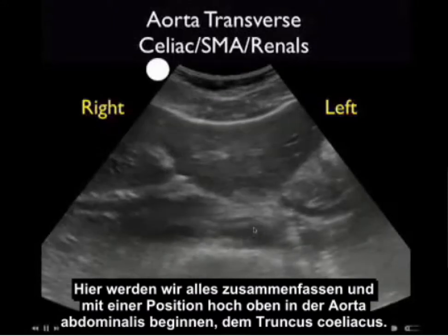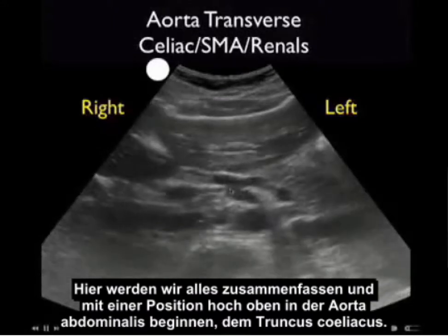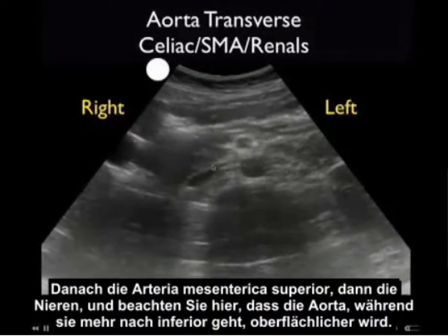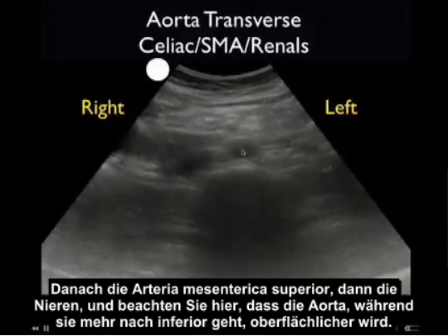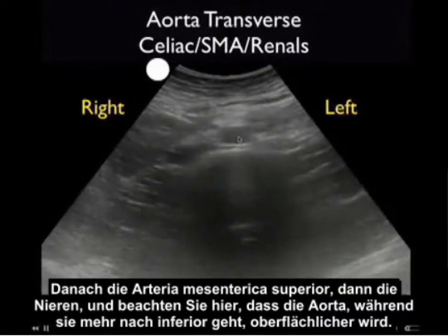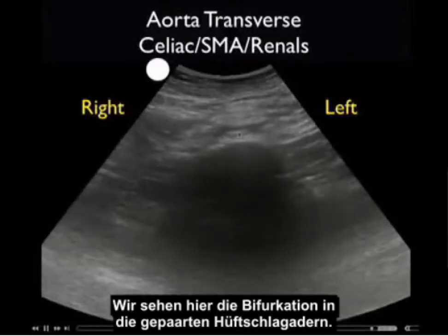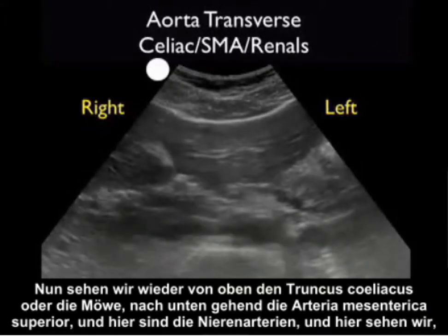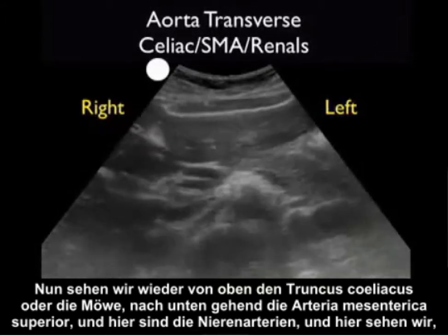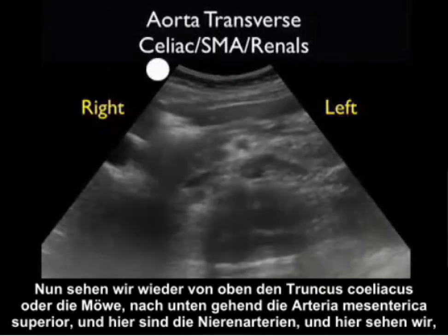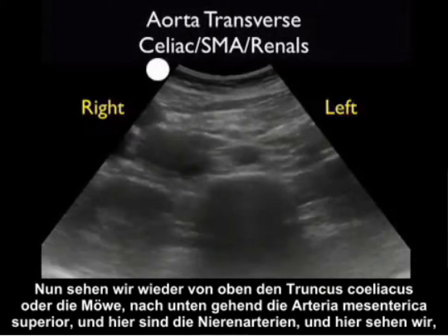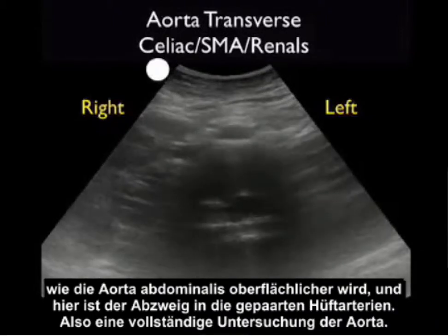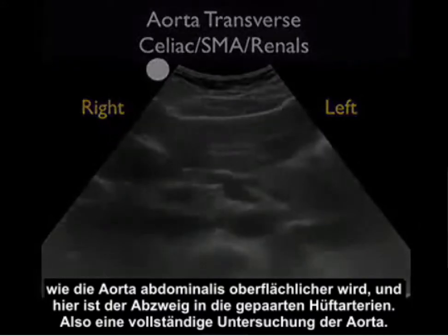Here we'll put it all together, starting from a position high in the abdominal aorta — there's the celiac axis, next the superior mesenteric artery, then the renals — and notice that the abdominal aorta becomes more superficial as it moves more inferiorly. We see the bifurcation into the paired iliac arteries. So again from the top: the celiac or seagull sign moving down, the SMA, the renal arteries, the aorta becoming more superficial, and branching into the paired iliac arteries — a complete aortic exam.